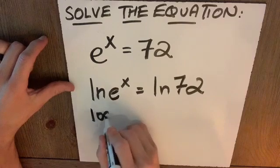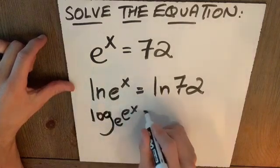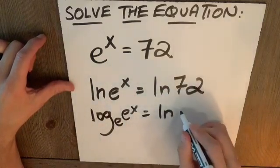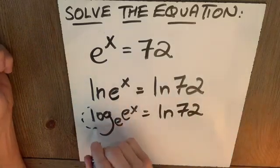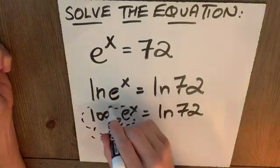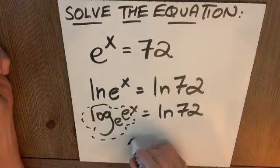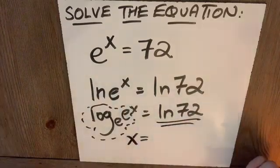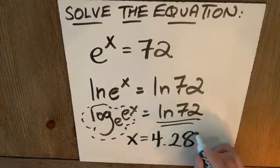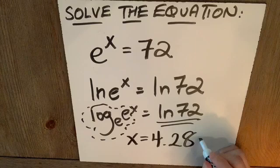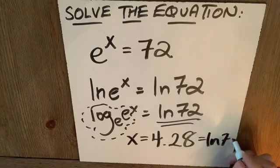This is really log base e of e to the x equals log base e of 72. I'm not going to write it like that. And we know log base e of e to the x will just give us x equals natural log 72. Now, if you do this in your calculator, you'll get about 4.28. Or the exact answer is natural log of 72.